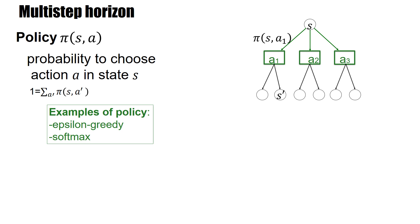So far we have discussed reinforcement learning in a scenario where we had a one-step horizon. Starting from a state S, you had one action to take and that led you to the final state. But now let's extend this — let's go to a multi-step horizon.